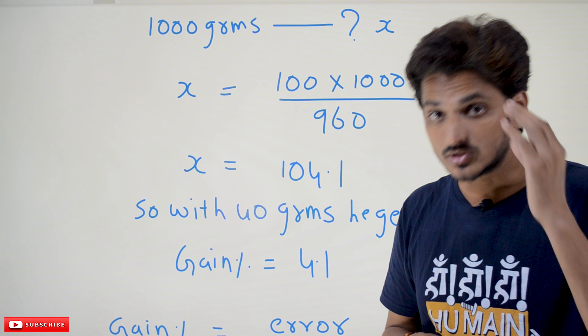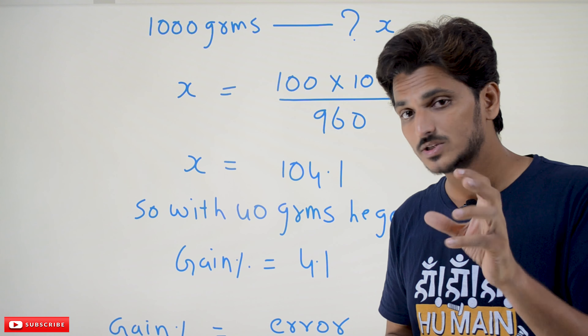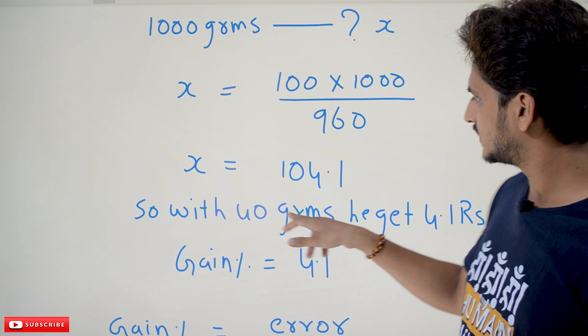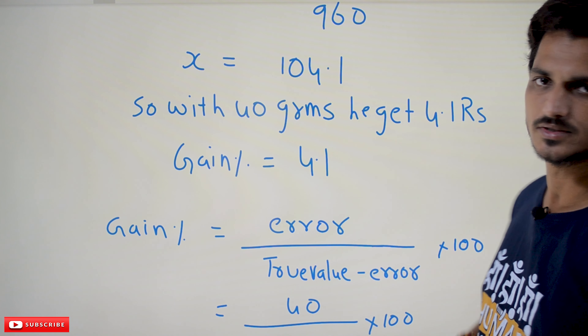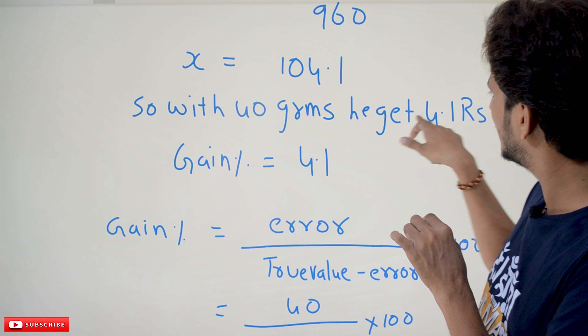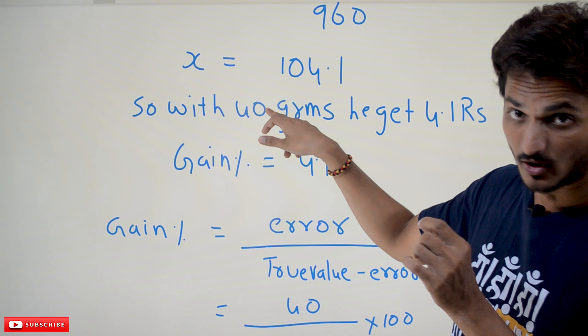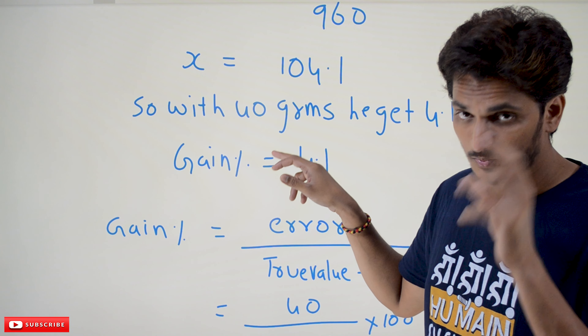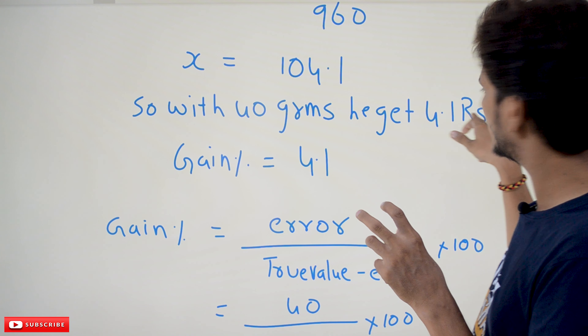x equals 104.1. So if you sell 1000 grams, you get 104.1 rupees. The actual cost price for 1000 grams is 100 rupees, so the gain is 4.1 rupees — and since we took cost price as 100, the gain percentage is directly 4.1%. So with a 40 gram error, he gains 4.1 rupees.